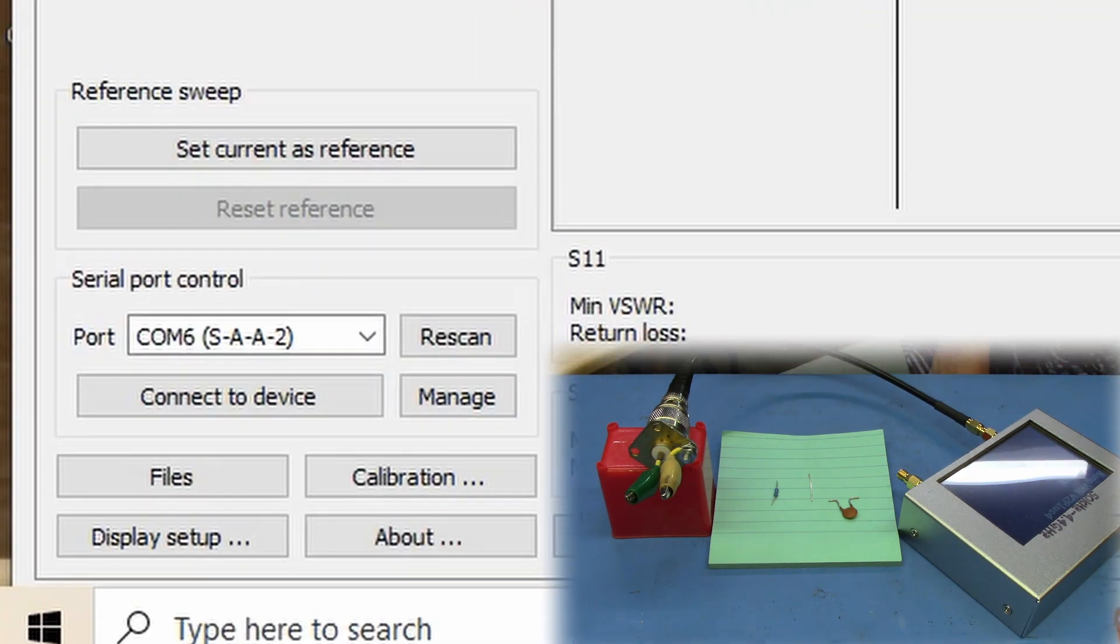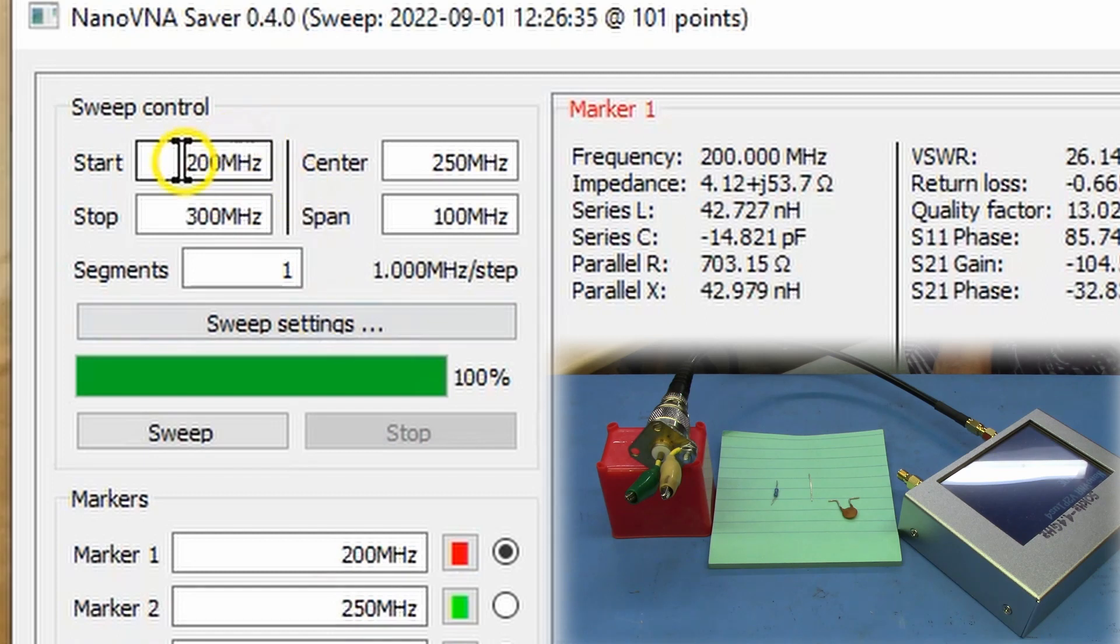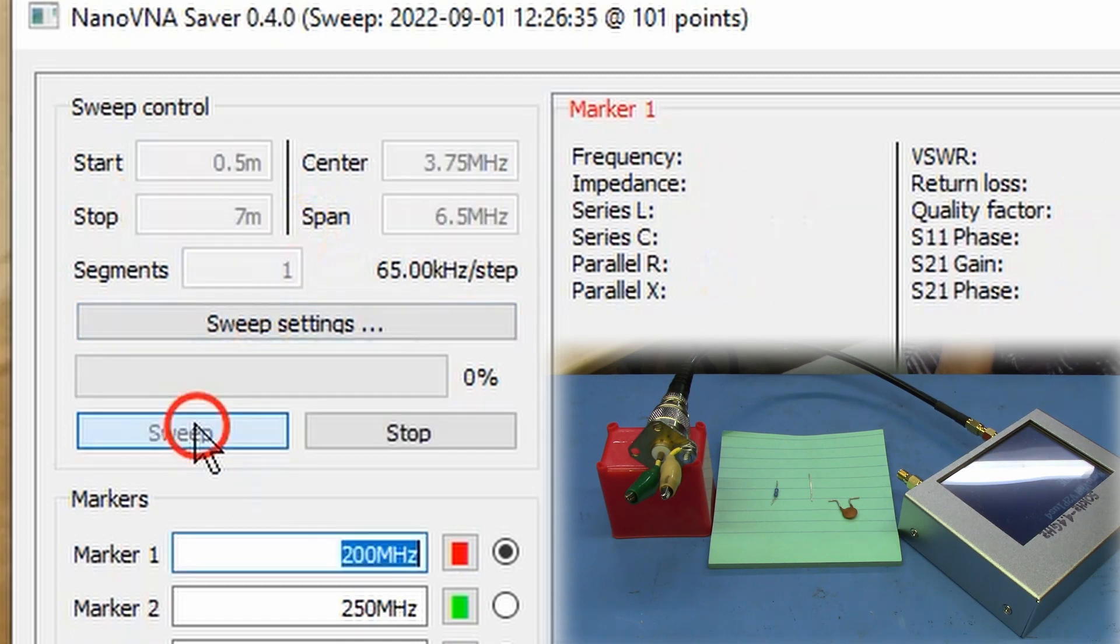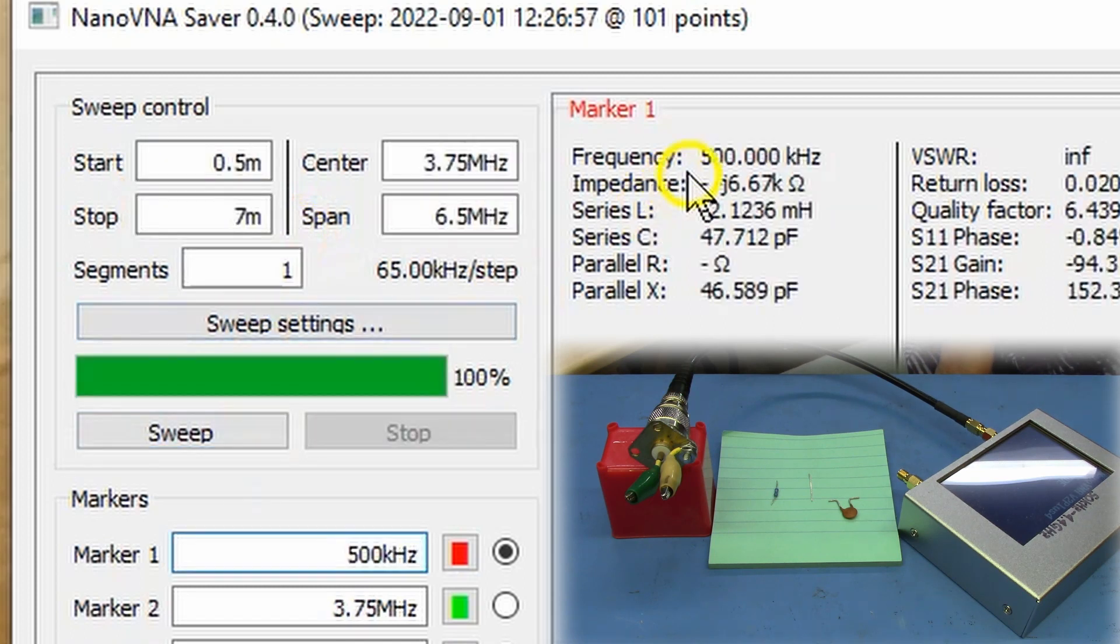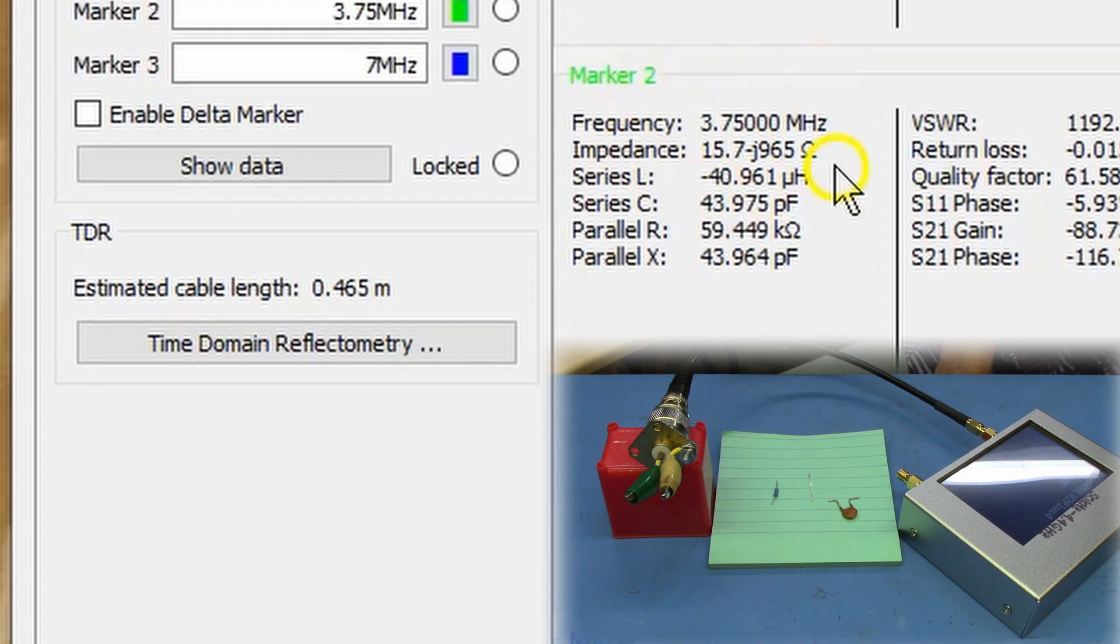And then we will connect to the VNA. We have to first set our start and stop frequencies. I am going to choose 0.5 MHz and a stop frequency of 7 MHz. And I'll do a quick sweep. Make sure that everything looks good. 500 KHz up here. 7 MHz down here. 3.75 MHz. There we go. Alright.